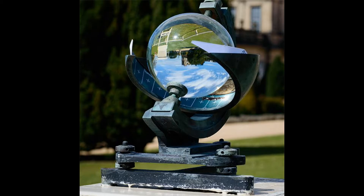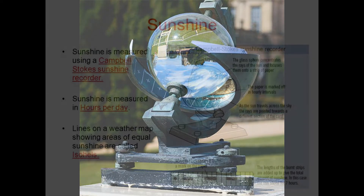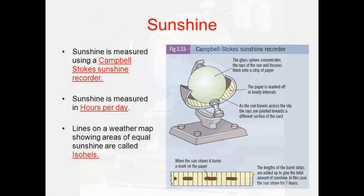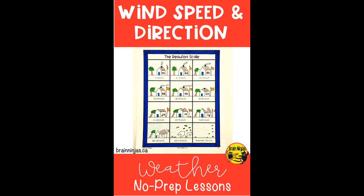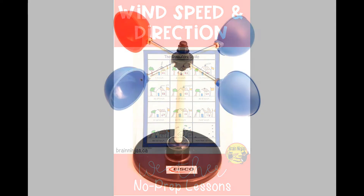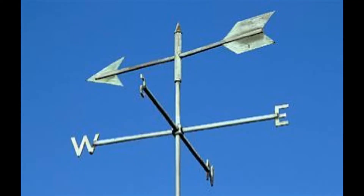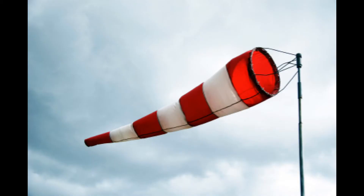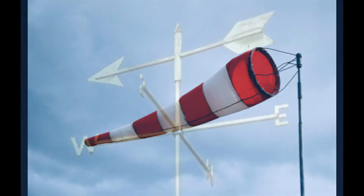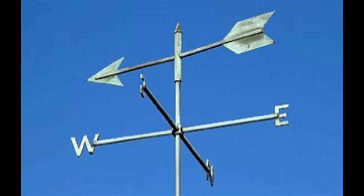For sunshine, we use the Campbell Stokes sunshine recorder. For wind — and as you realized, wind is divided into two categories: wind speed and wind direction. For wind speed, we have the anemometer. For wind direction, this is taken on the wind vane. Some weather stations have what is called a wind sock, but the most accurate one is the wind vane.